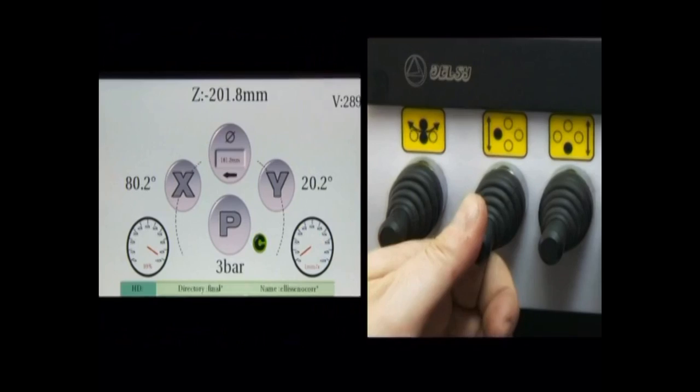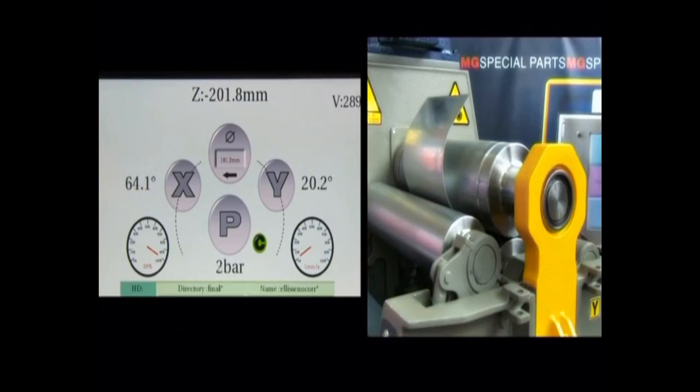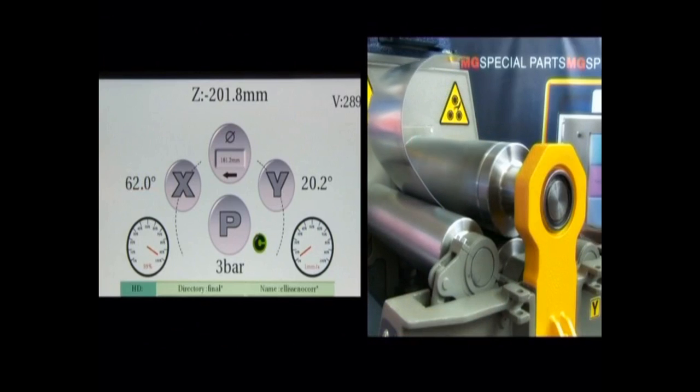As second test angle, we use a smaller value to obtain a rather big bending radius, bigger than the maximum bending radius of the shape we're going to make.